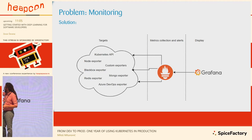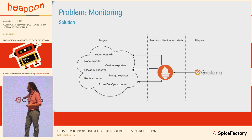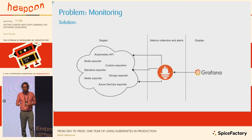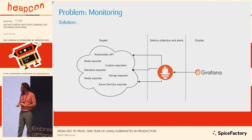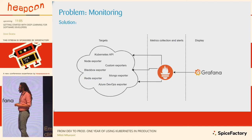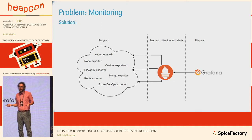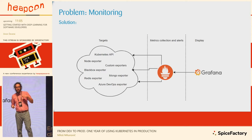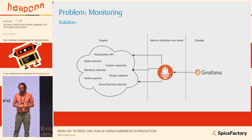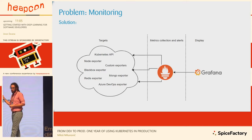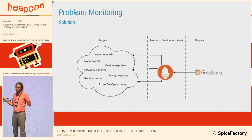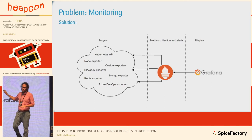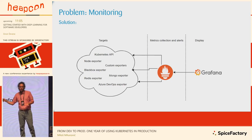We added exporters for whatever we needed, sent them to Prometheus, and had Grafana dashboards displaying data to customers. This meant if you wanted to debug something — your app is not running correctly and is communicating with app B and app C — you could go ahead, look at the logs regardless of how many replicas are running, see what the cluster is doing at any point in time, and see what your app is doing at any point in time.